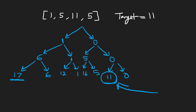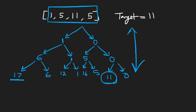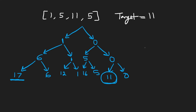So as you can tell, since every level of our decision tree we're having two choices, and the height of this decision tree is going to be basically for every single element. So let's say the input size of the array is N — our time complexity is going to be two to the power of N if we do a brute force method.